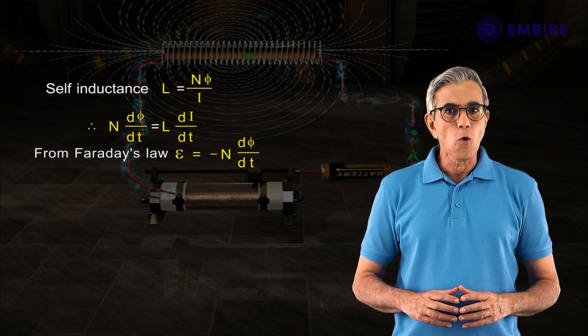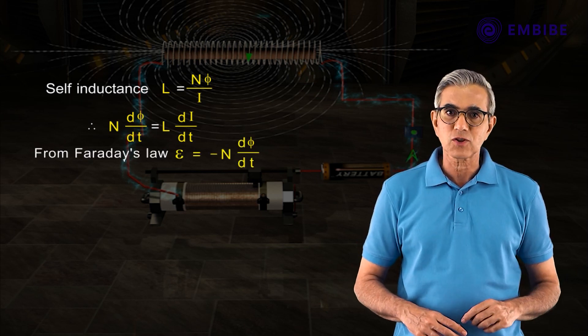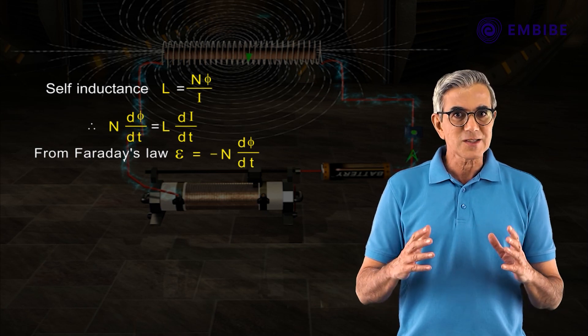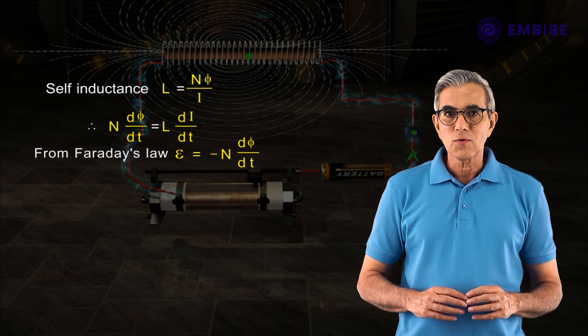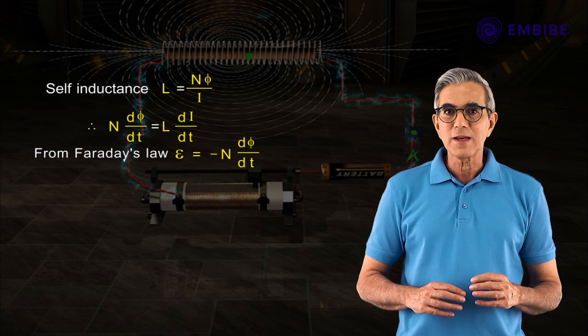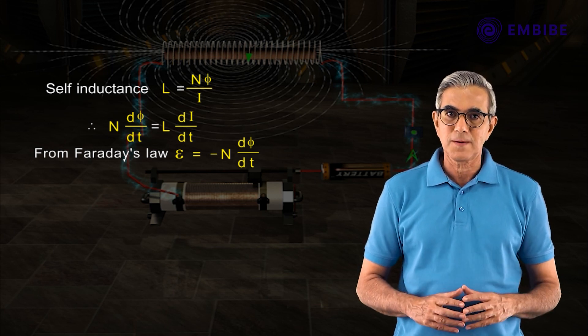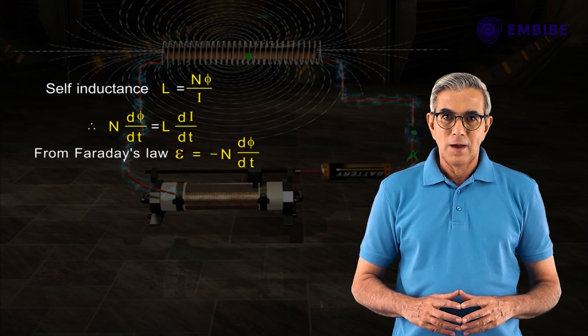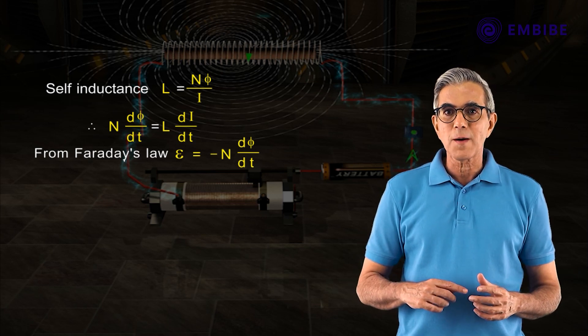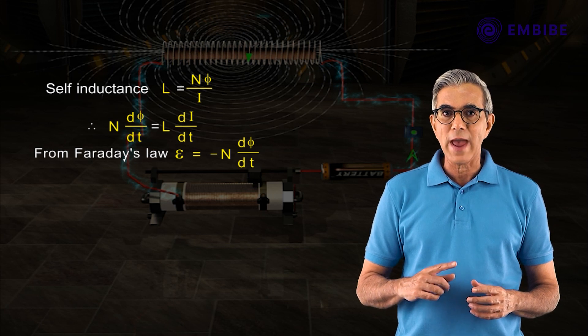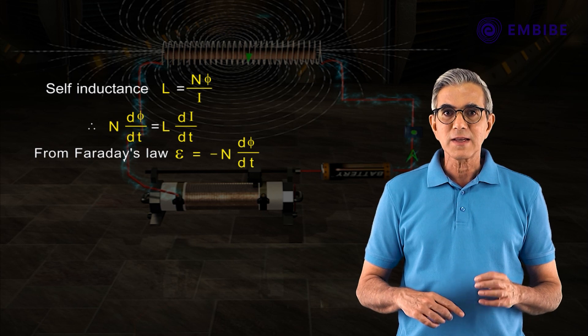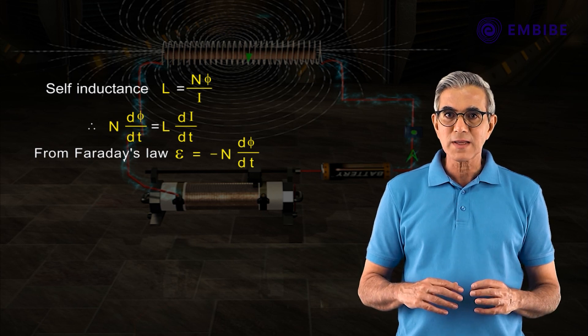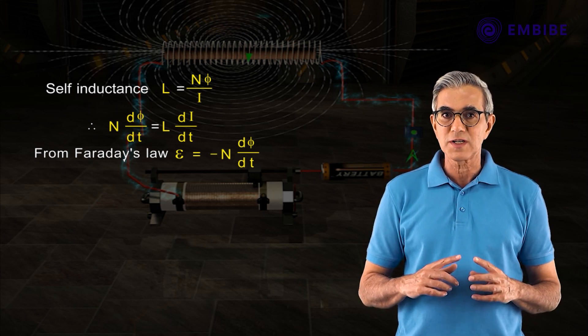Faraday's law holds for self-induction. Hence the self-induced EMF is E = -N·dφ/dt. From the equations N·dφ/dt = L·dI/dt and E = -N·dφ/dt,